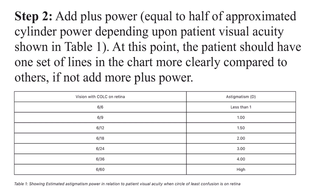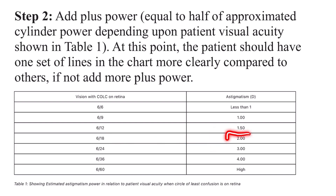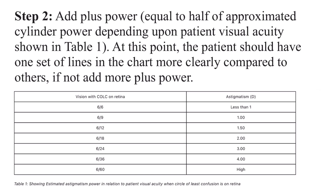In step 2, you estimate the astigmatism from the patient's visual acuity with the best vision sphere. Suppose the patient's visual acuity with best vision sphere is 6/18 — it is estimated the patient has uncorrected astigmatism of 2 diopters. You are going to add plus power equal to half of the estimated astigmatism, which in this case is +1 diopter, to the best vision sphere. At this point, the patient should see one set of lines on the chart more clearly compared to the others. If not, add more blur in 0.25 steps until one line becomes clearer.